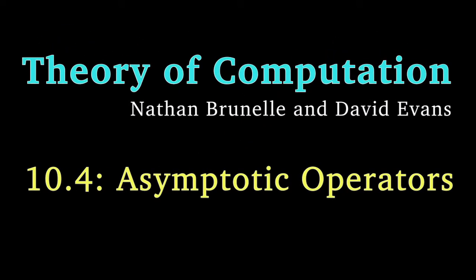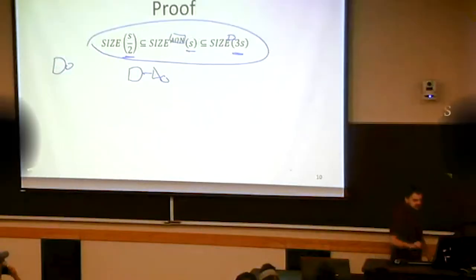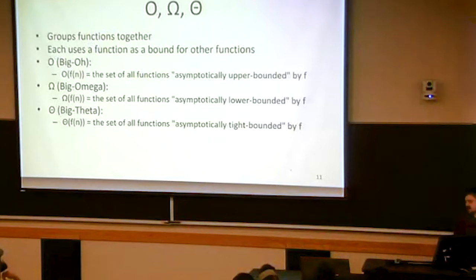Next, we're going to be talking about how we can represent things so that the constants don't matter. And that is using this asymptotic notation.